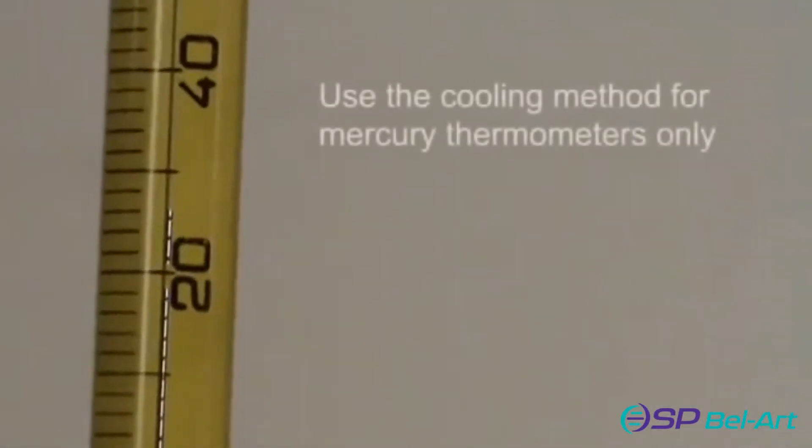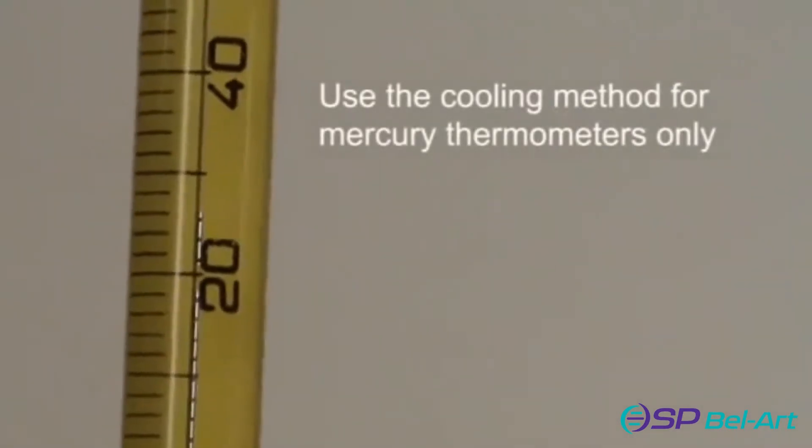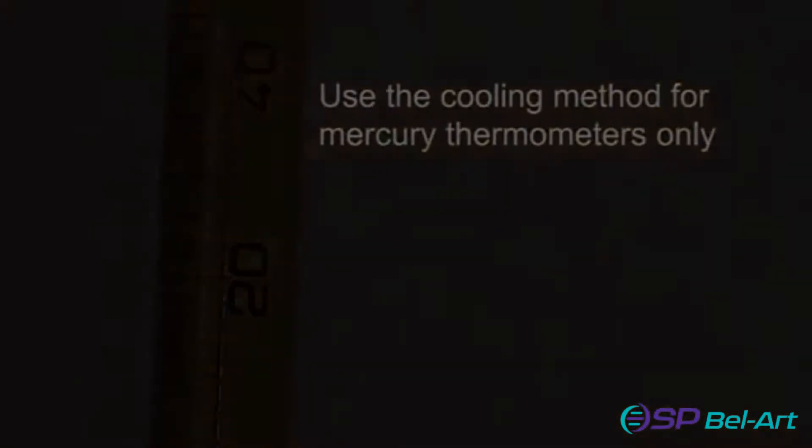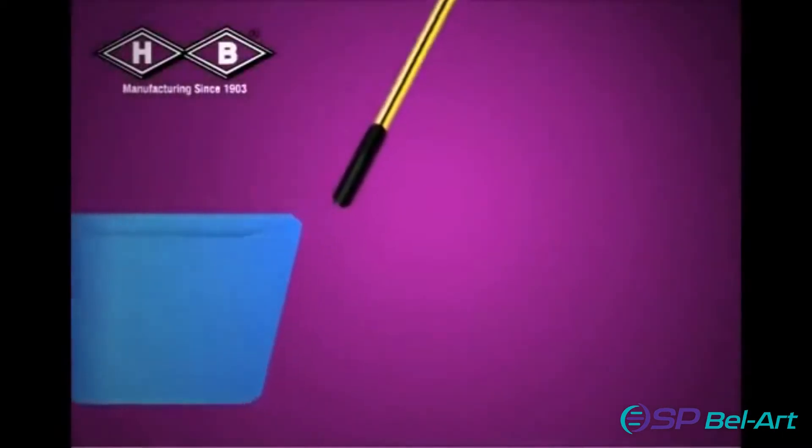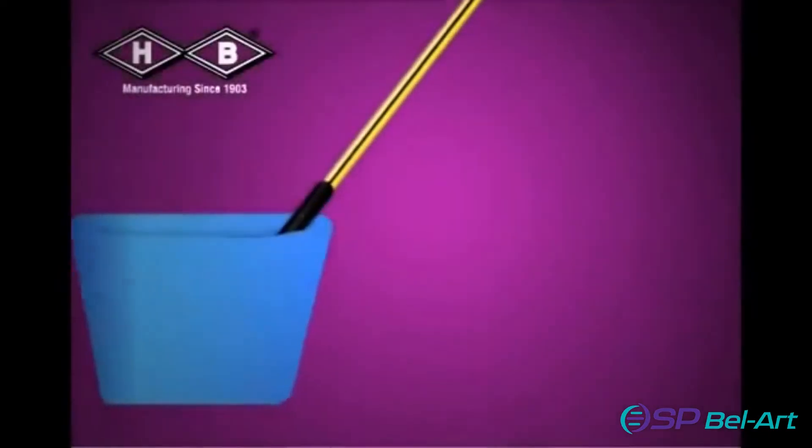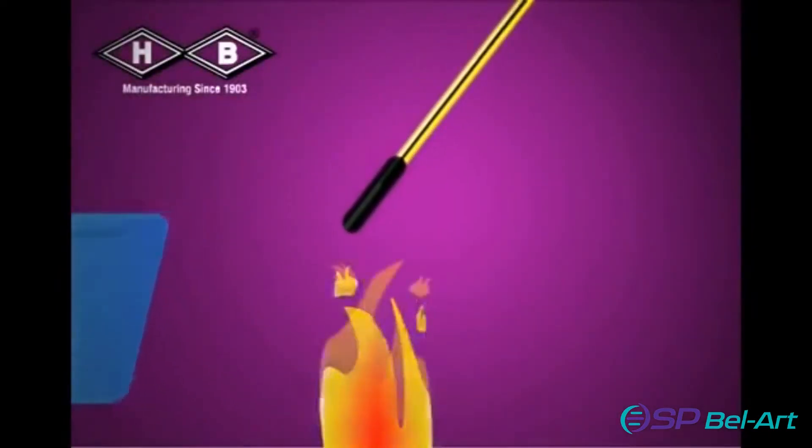The cooling method should only be used with mercury thermometers unless they have a contraction chamber, because this method may cause other liquids to freeze and the bulb to break. Depending on the separation, it may be necessary to apply both methods.